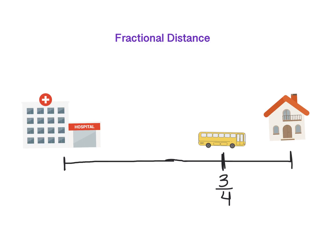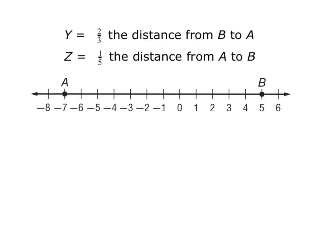Now let's look at an example with calculating fractional distance on a number line. Here I have a number line with points A and B. I want to place letter Y such that it's two-thirds of the distance from B to A, and then place Z such that it's one-fifth of the distance from A to B. One of the first things I want to do is count the full distance.